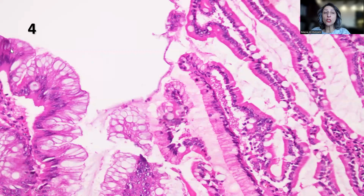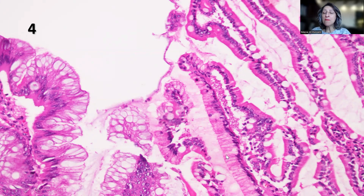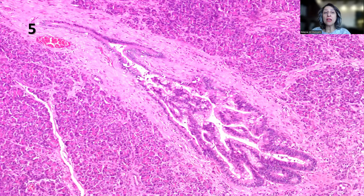In this area, you can see the same villous adenoma-like appearance with high-grade dysplasia, growing and creeping along the surface epithelium. And suddenly, we start to see the normal duodenal epithelium — a really nice depiction of the way these tumors sometimes grow along the epithelium.